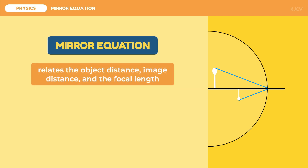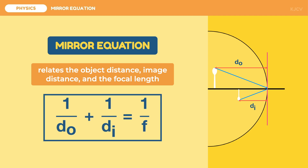We use the mirror equation to relate the object distance, image distance, and the focal length to each other. In this diagram, we will put an imaginary line tangent and perpendicular to the vertex to see the relationships of the values. The object has a certain distance of D sub O from the vertex, and the image has a distance of D sub I from the vertex. We have created two similar triangles from the tangential segment, which gives us the relationship described by the equation: 1 over D sub O plus 1 over D sub I is equal to 1 over the focal length. This is the mirror equation.